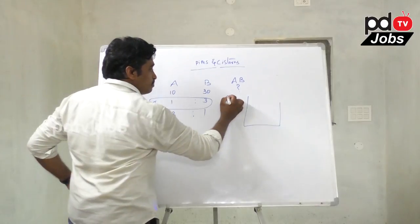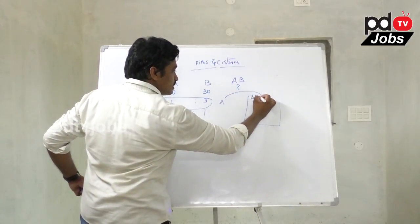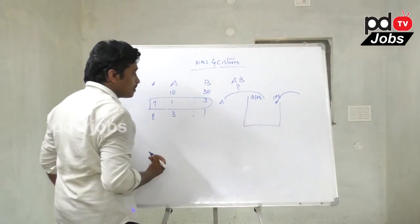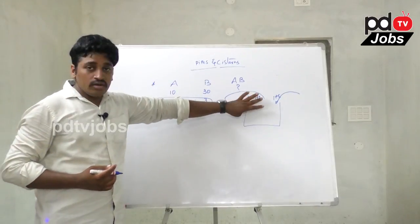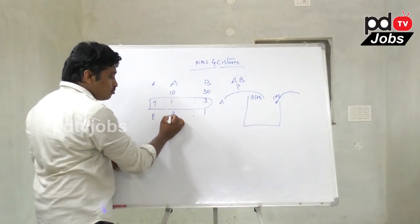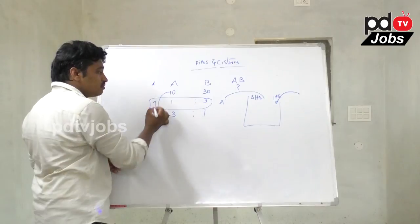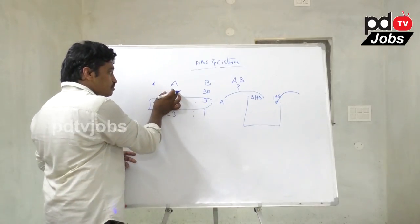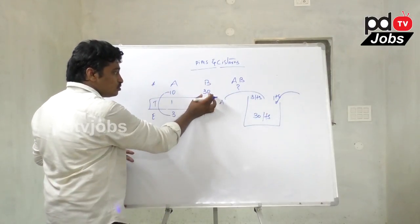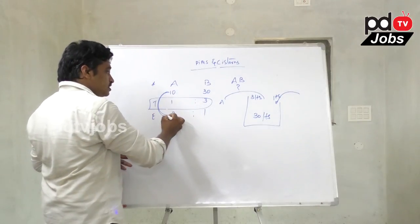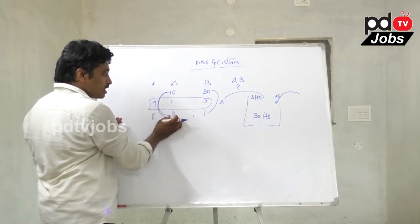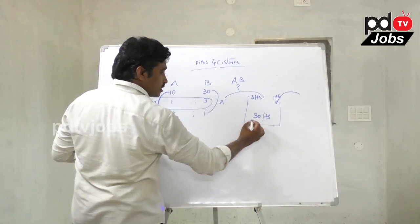Pipe A fills 3 liters of water into the tank and pipe B fills 1 liter. The tank capacity is calculated as time into efficiency equals total work. Total work equals 30 liters.